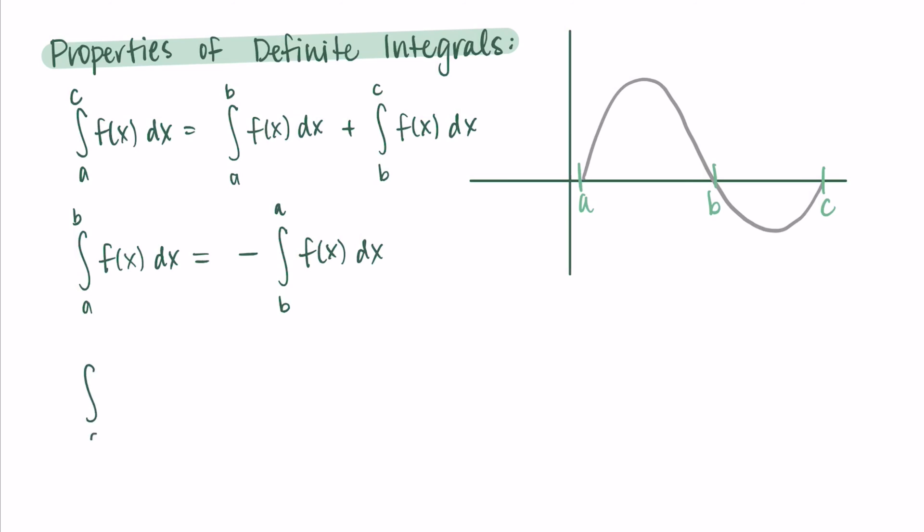The next thing is that if we are looking at the integral from a to a, this is always zero. We're looking at the area under the curve on an interval from a to a — there's no area there, so it's zero.